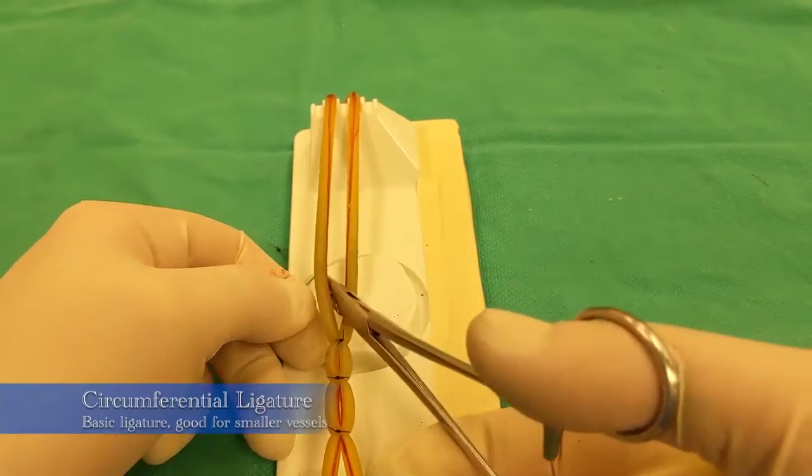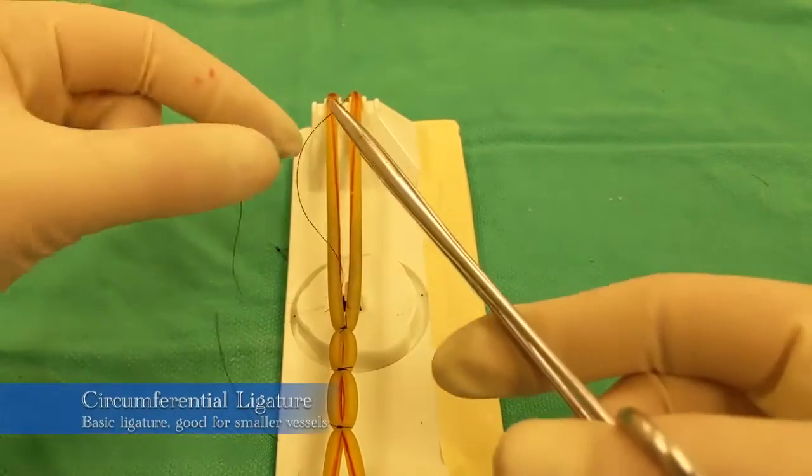For a simple circumferential ligature, you'll just wrap your suture around your model vessel once.